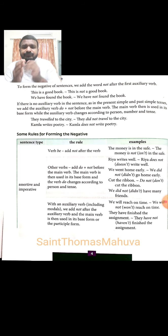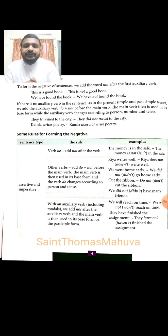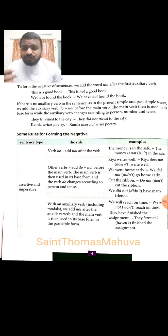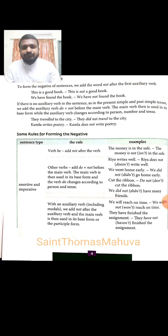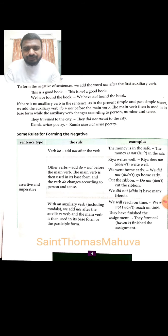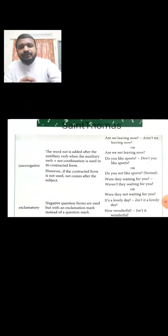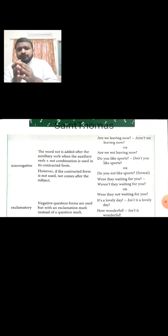If there are other verbs, we need to add 'do not' or the appropriate forms of 'do not.' For example, 'We went home early' becomes 'We did not go home early,' or 'Cut the ribbon' becomes 'Do not cut the ribbon.' The forms of 'do' should change according to person and tense. If there is an auxiliary verb, we add 'not' after the auxiliary verb and the main verb follows. For example, 'We will reach on time' becomes 'We will not reach on time'; 'They have finished the assignment' becomes 'They have not finished the assignment.'